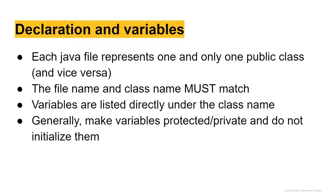Use protected if you plan to derive other classes from this class and you want those classes to inherit that variable. But if you don't plan on deriving classes from the current class, or if you don't want the derived classes to inherit a specific value, you are going to make it private.